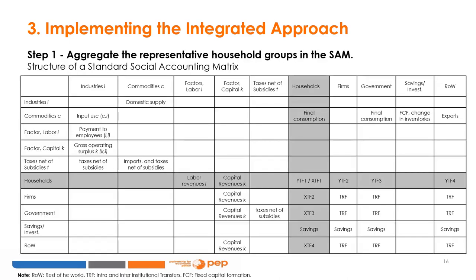Step one: aggregate the representative household groups in the SAM. The various representative household categories of the SAM are aggregated into one category through the various income sources, for example labor, capital, and transfers (YTF), and the different expenditure types, for example final consumption of goods and services, and transfers (XTF), and savings. This aggregation facilitates the mapping of incomes, expenditures, and savings between the representative household categories in the SAM and the individual households in the survey data.